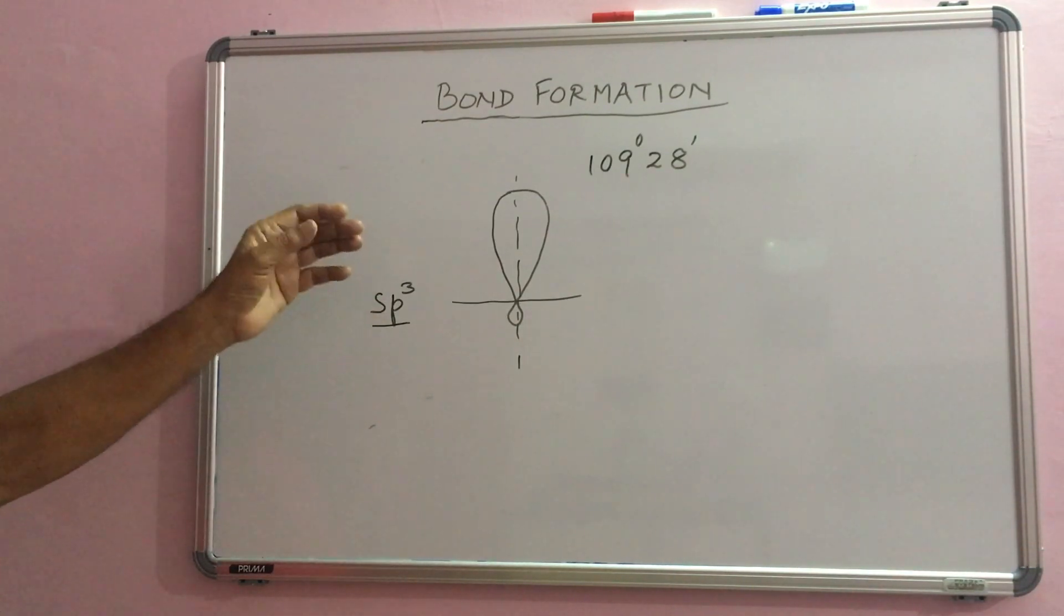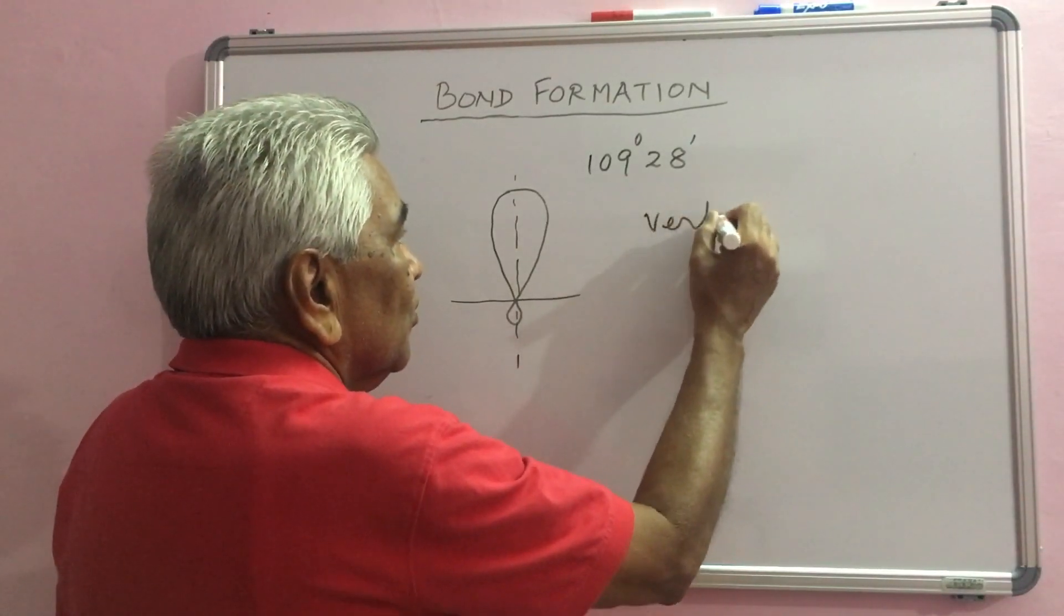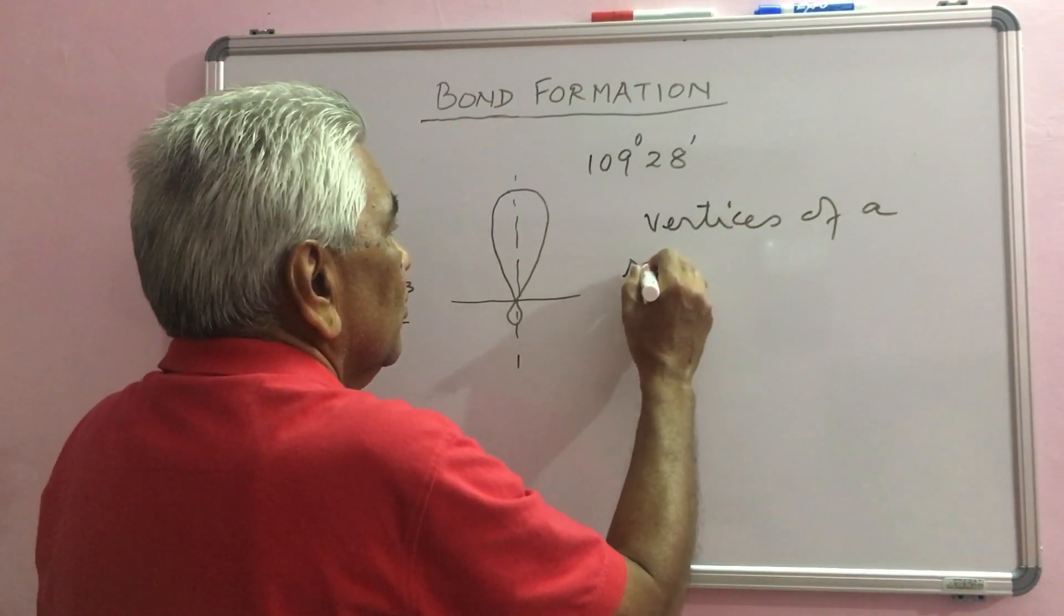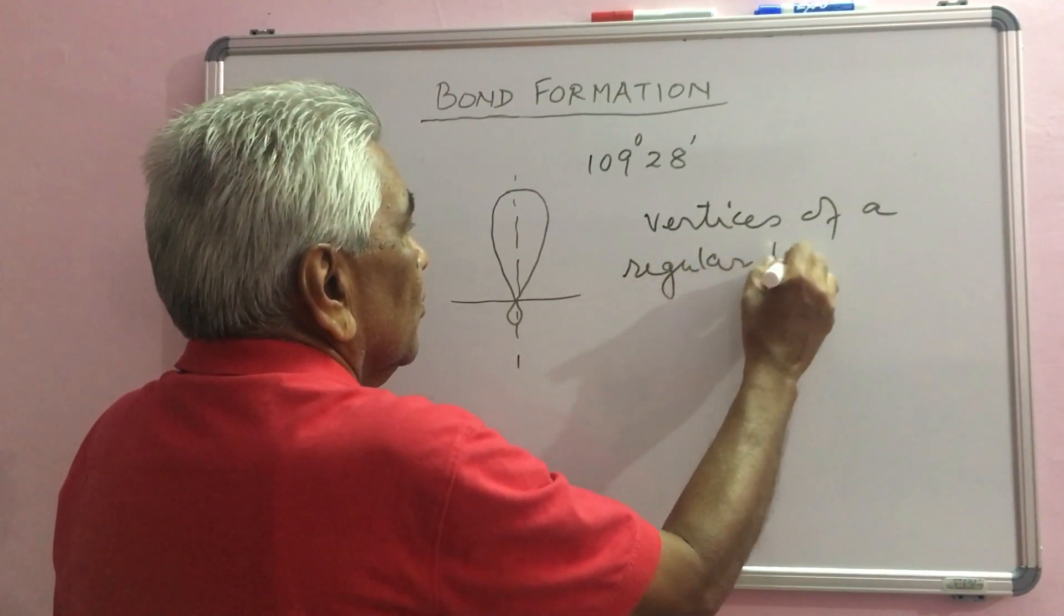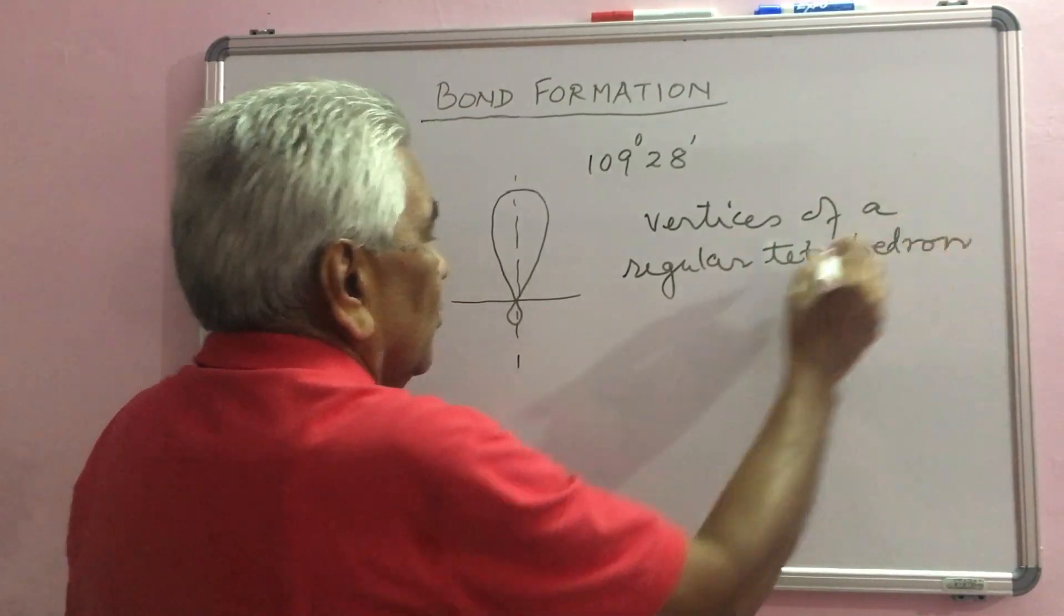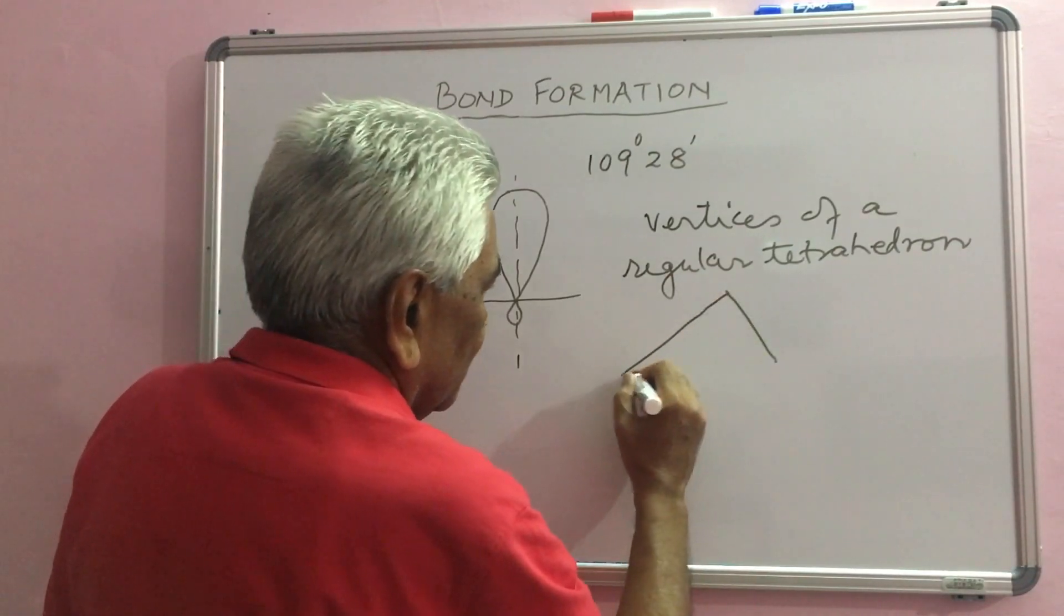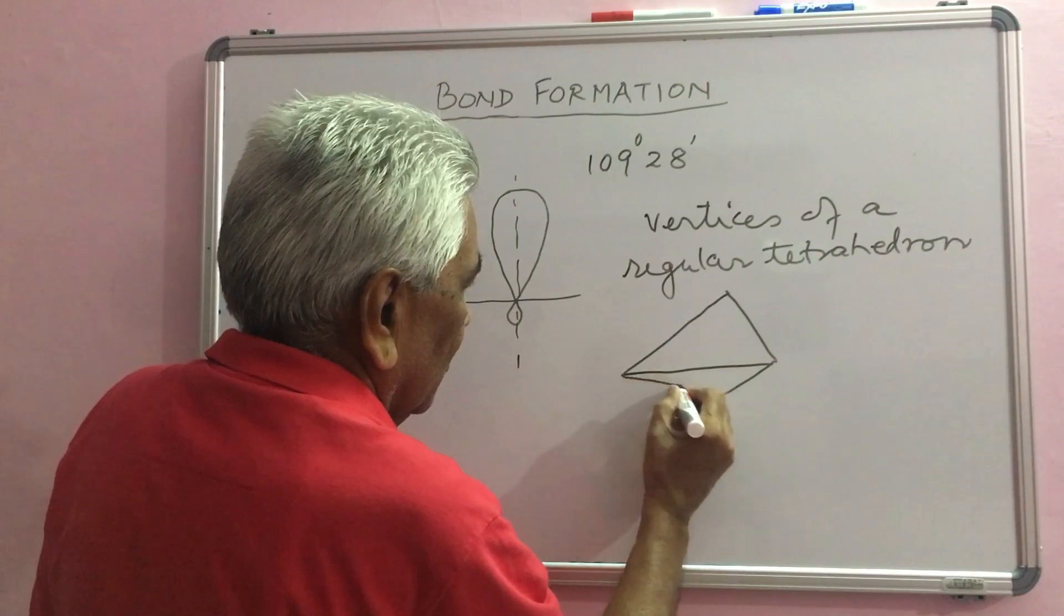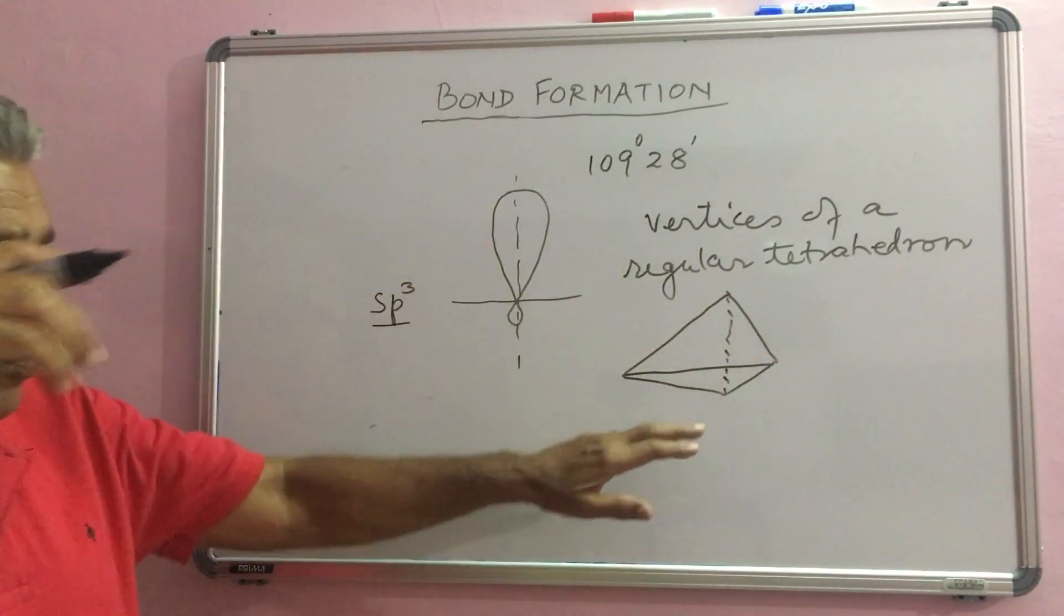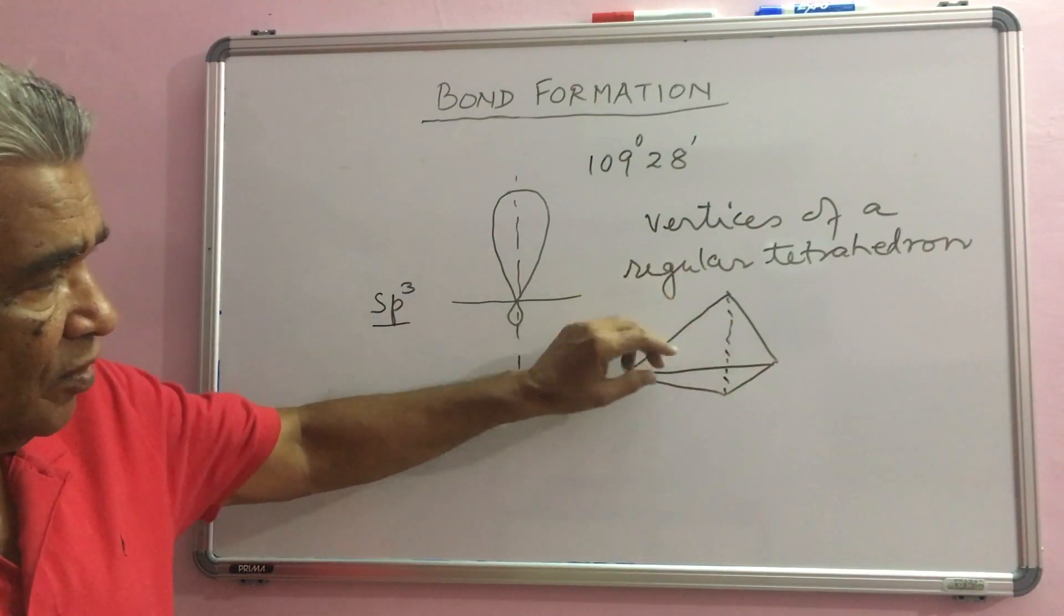In other words, it can be said that they are directed towards the vertices of a regular tetrahedron. This is a tetrahedron, 4 faces: 1, 2, 3 and 4.